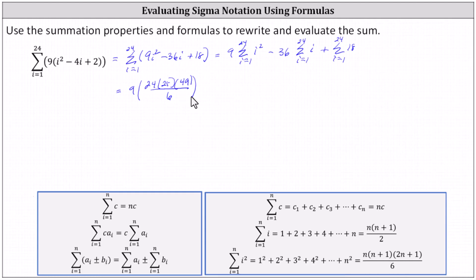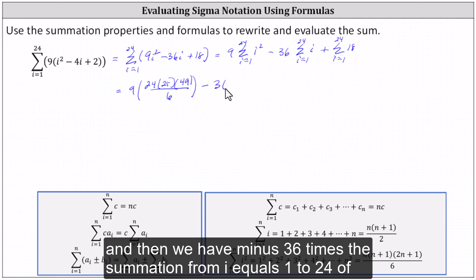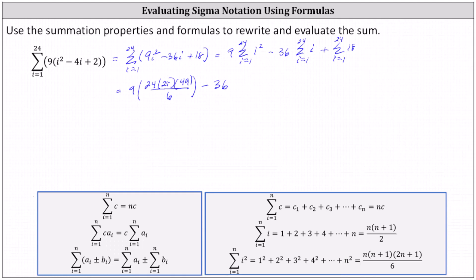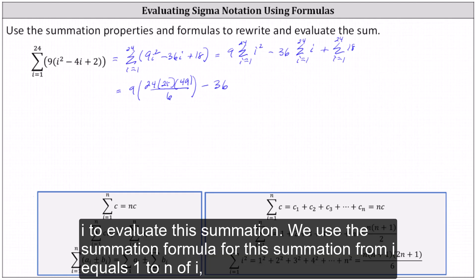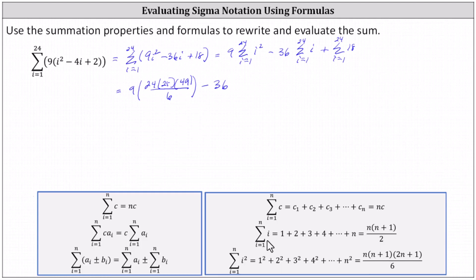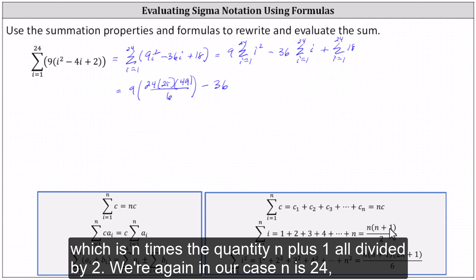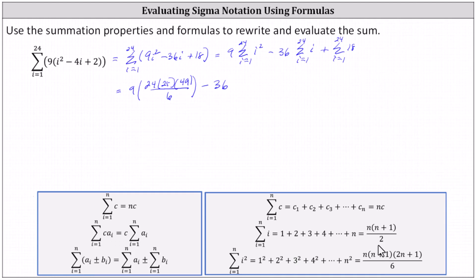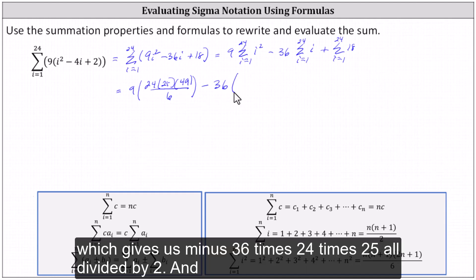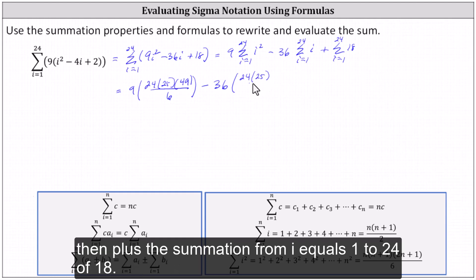Then we have minus 36 times the summation from i equals 1 to 24 of i. To evaluate this summation, we'll use the formula: the summation from i equals 1 to n of i equals n times the quantity n plus 1, all divided by 2. With n equals 24, this gives us minus 36 times 24 times 25, all divided by 2.